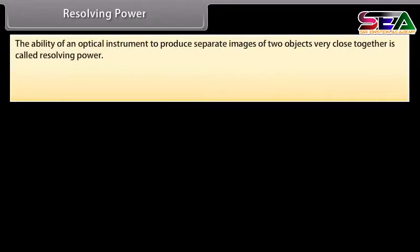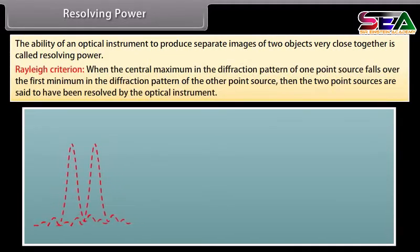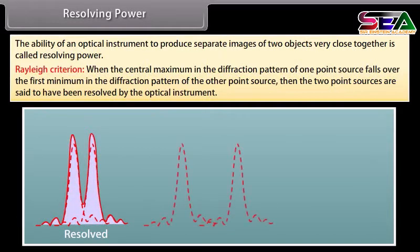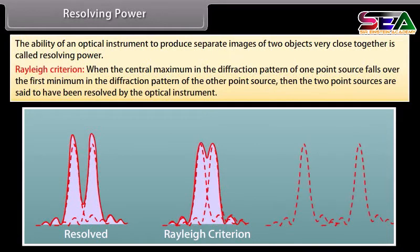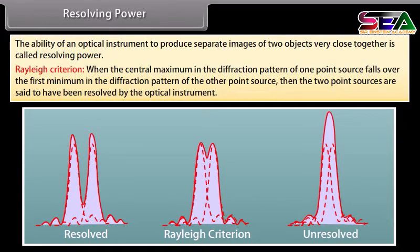Resolving power. The ability of an optical instrument to produce separate images of two objects very close together is called resolving power. Rayleigh criteria: when the central maximum in the diffraction pattern of one point source falls over the first minimum in the diffraction pattern of the other point source, then the two point sources are said to have been resolved by the optical instrument.